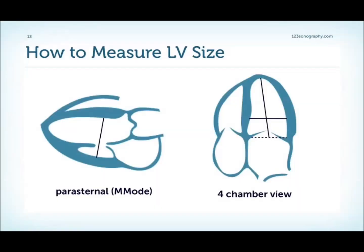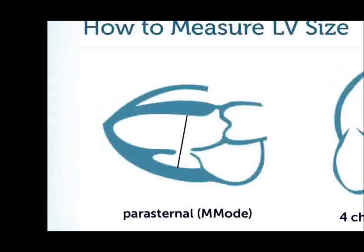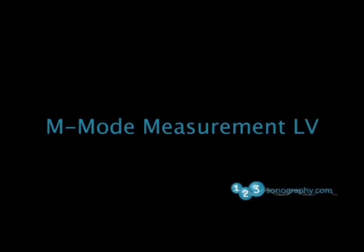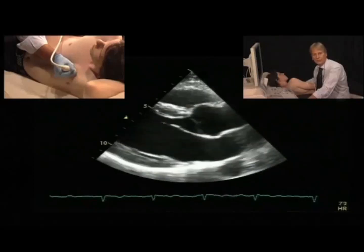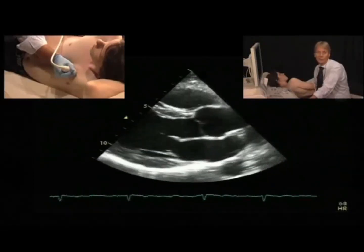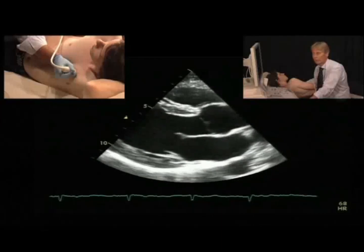The diameter of the left ventricle has traditionally been measured using M-mode from a parasternal approach, but you can also measure diameters using the four-chamber view. The following demos will show you how to measure diameters of the left ventricle. I will show you how to do it from the short axis.